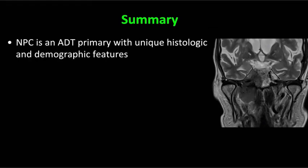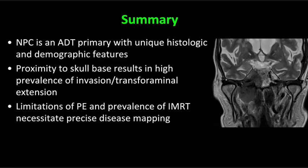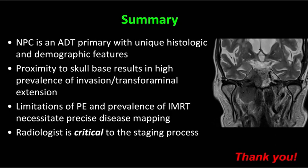In summary, we've talked about how nasopharyngeal carcinoma is an aerodigestive tract primary with very unique histologic and demographic features. We talked about how proximity to the skull base results in a very high prevalence of skull base invasion, extension through skull base foramina, extension along cranial nerves or the internal carotid artery. We discussed the limitations of physical examination — this is a difficult area to see, typically through a scope — and the prevalence of intensity modulated radiotherapy in treating these patients, with the necessity for tightly conformed maps really necessitating precise disease mapping. Radiology is critical to mapping these tumors and we are very important participants in the tumor boards in the staging of these patients. Thank you very much for your attention.